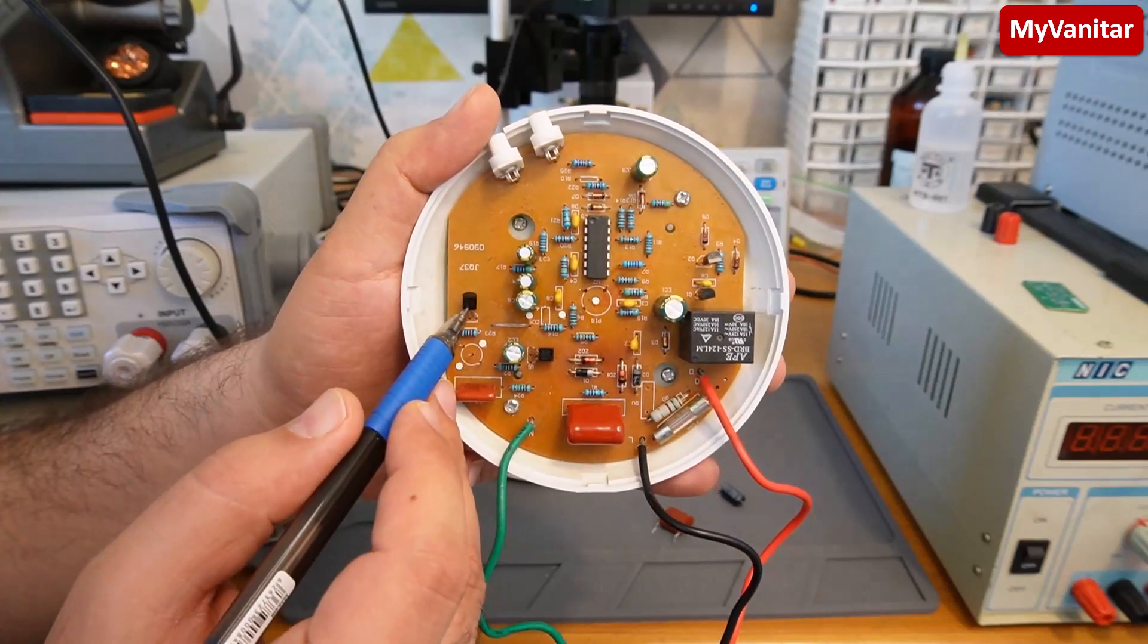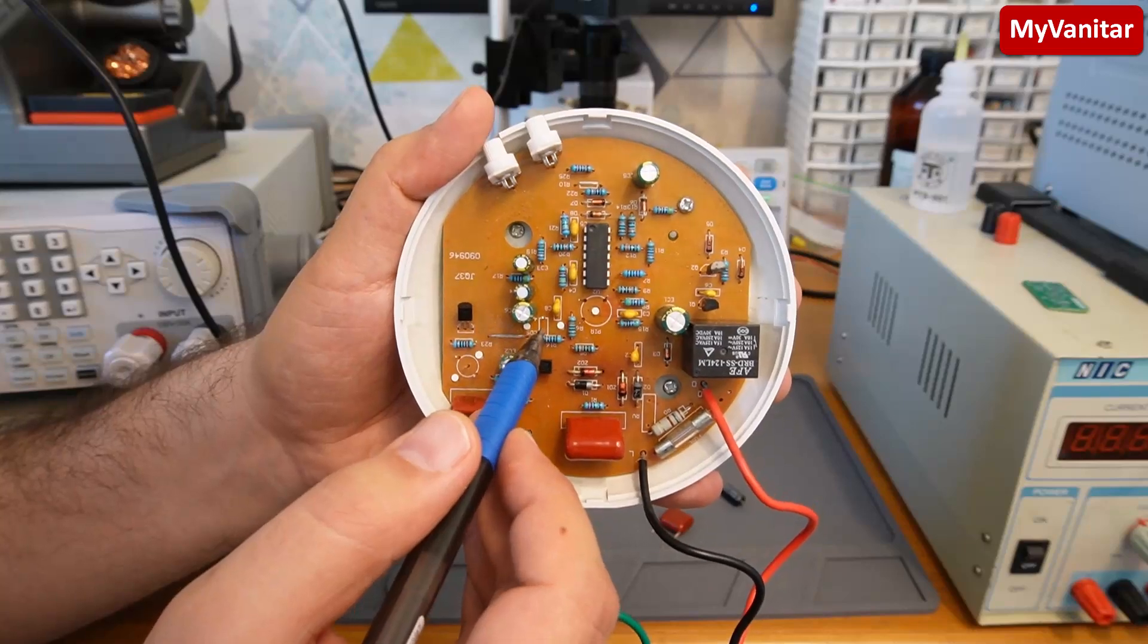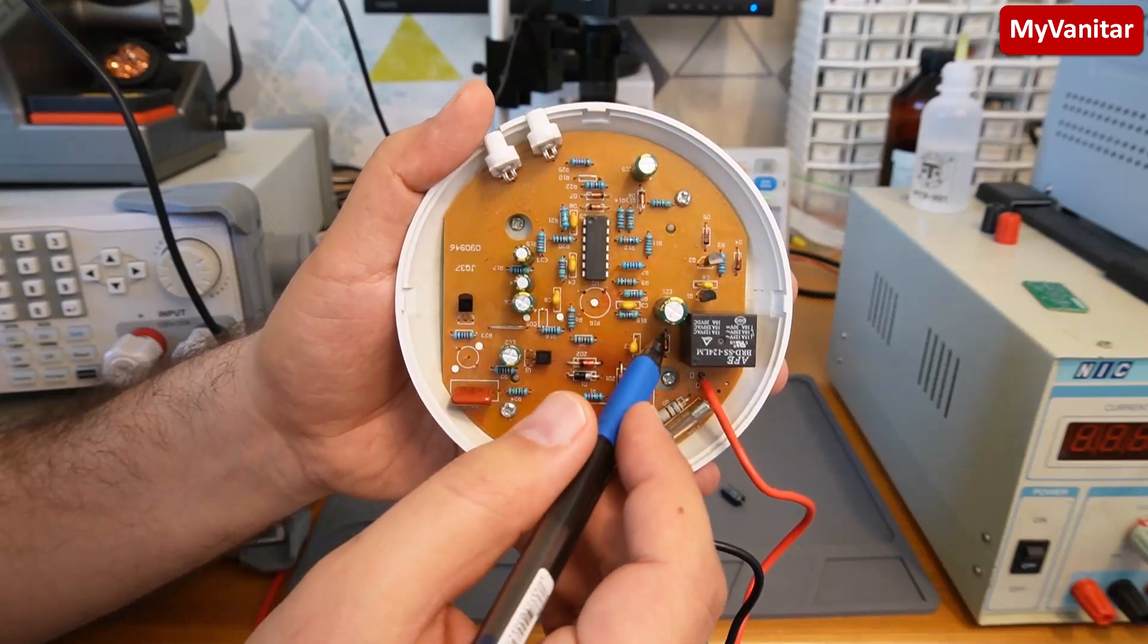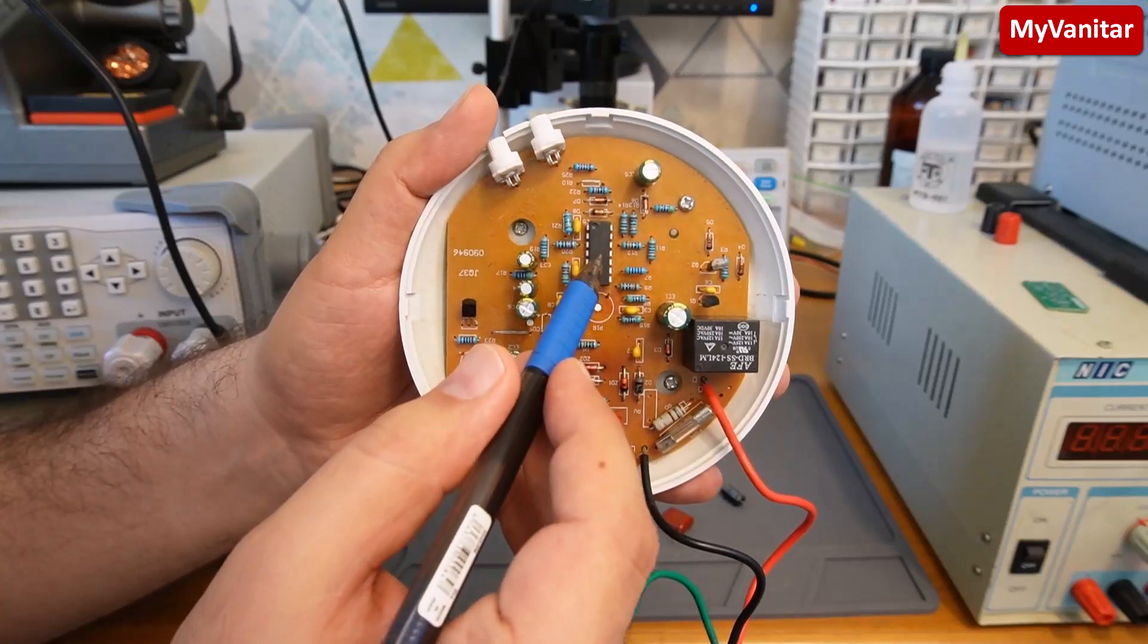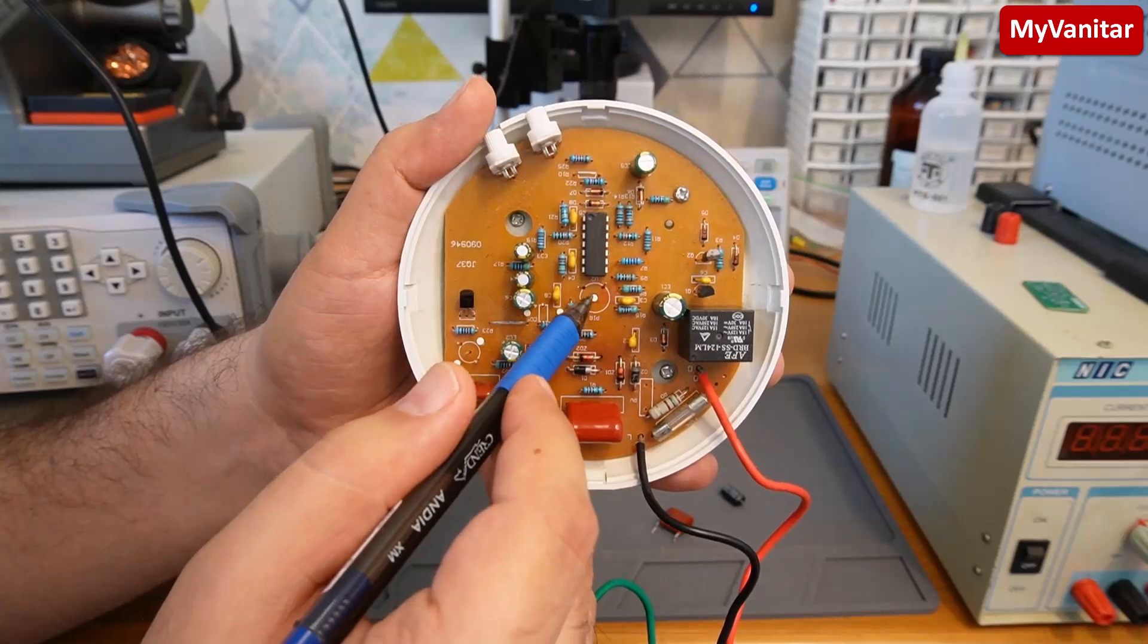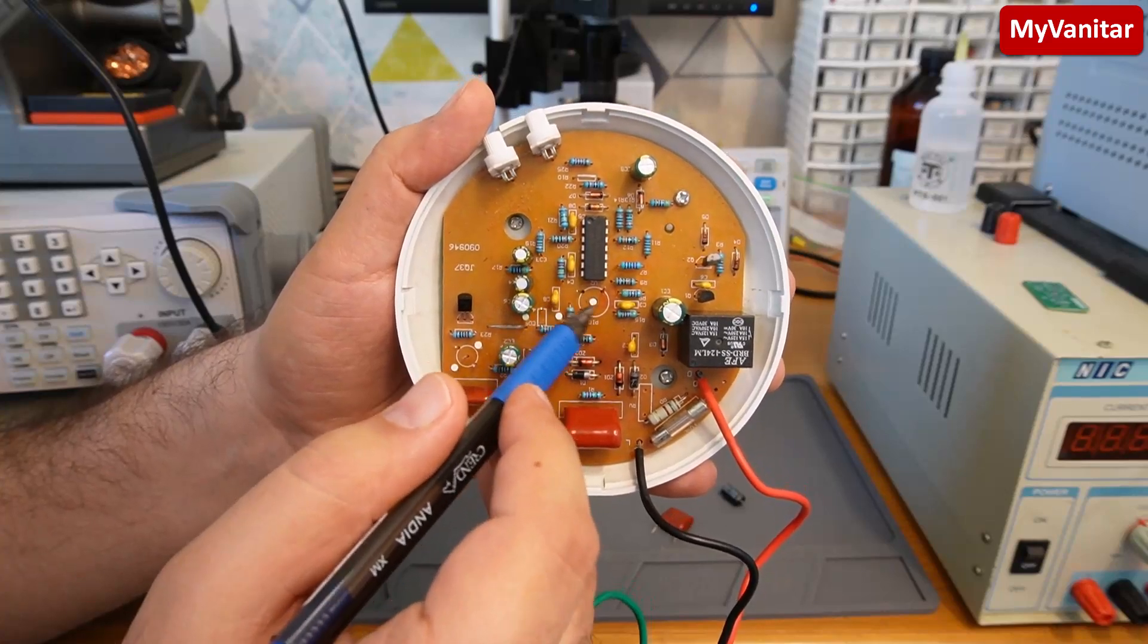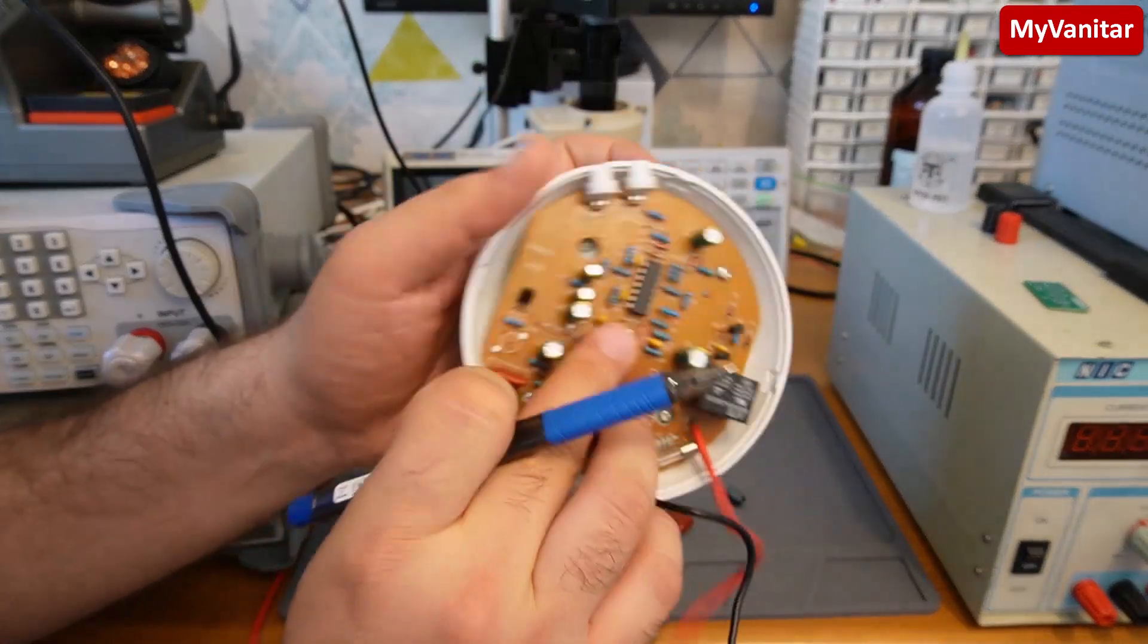This transistor I believe is to sense the LDR or light sensor and activates the ground of this relay. Because this op-amp amplifies the voltage variation of this PIR sensor. This sensor is on the backside of the board.